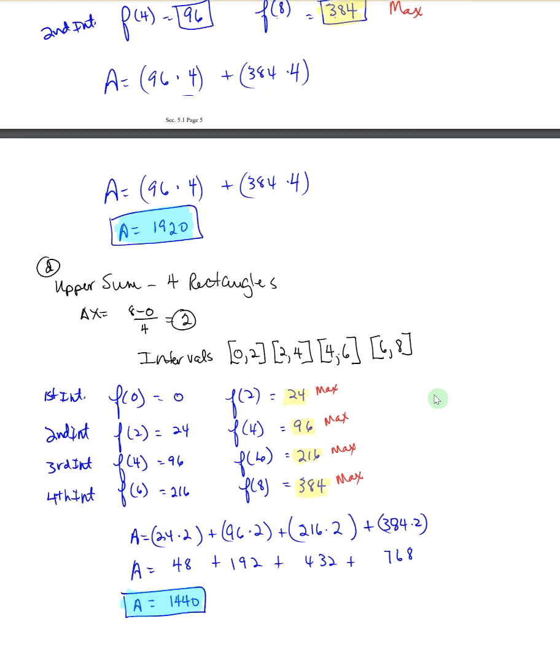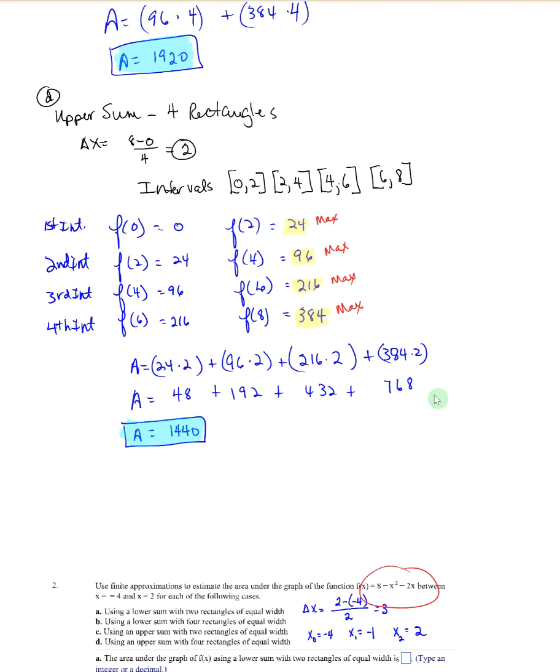Same idea for using 4 rectangles. Your width is 2, your intervals are 2. You do the same numbers but you are choosing the larger ones. So here's your area. You do that multiplication and you have a total area of 1440.